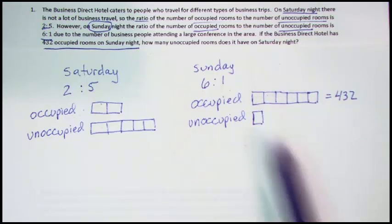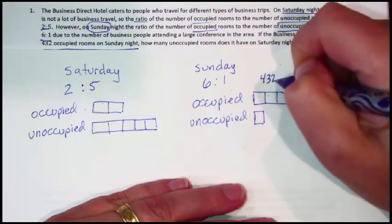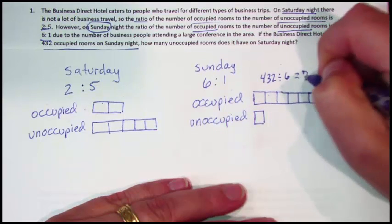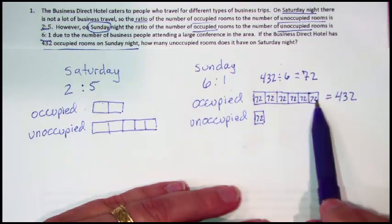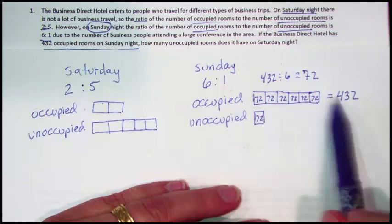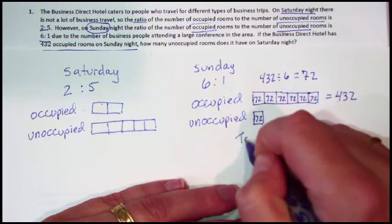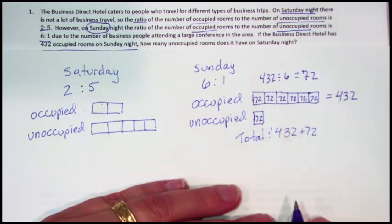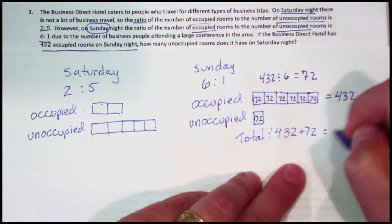If I want to know how many rooms each square represents, I need to take 432 divided by 6, and that gives me 72. Each square represents 72. So there were 432 occupied rooms and 72 unoccupied rooms on Sunday. The total number of rooms is 432 plus 72, or 7 times 72, which equals 504.